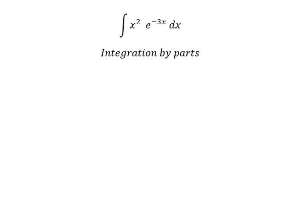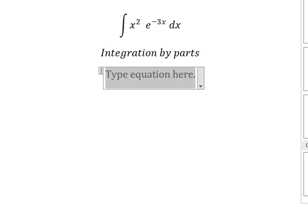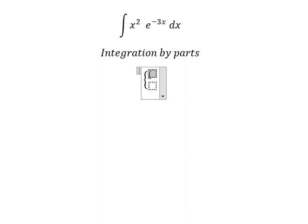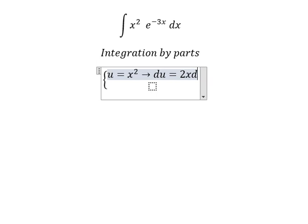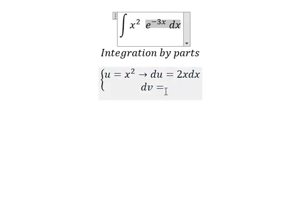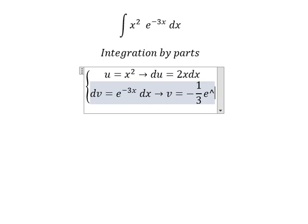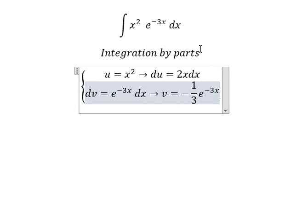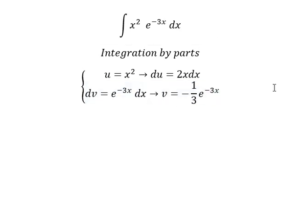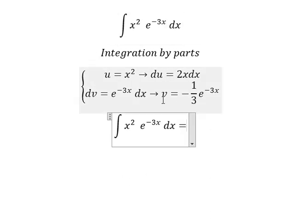We put u equals x squared. We take the derivative of both sides, giving 2x dx. Here dv is the exponential term, and the integration of that is negative 1 over 3 e to the power of negative 3x. So we have u multiplied by v.